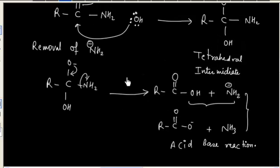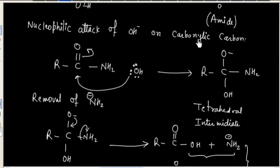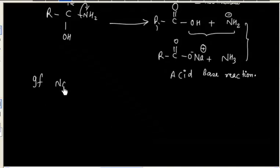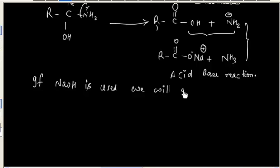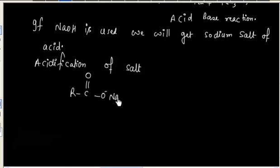If I acidify this salt, we will have NaOH. Initially we can take NaOH in place of OH-, that is Na+ OH-. This OH- is coming from NaOH. We will get the salt of acid, O- Na+. This means if NaOH is used, we will get the sodium salt of acid. Now this salt can be acidified to give acid. The next step is acidification of salt. We have the sodium salt of acid and this can be acidified, so finally we will have the acid.